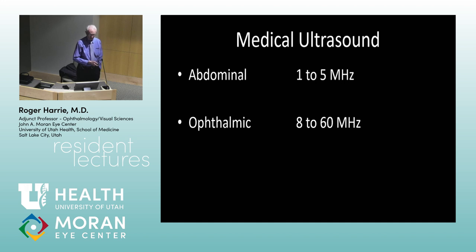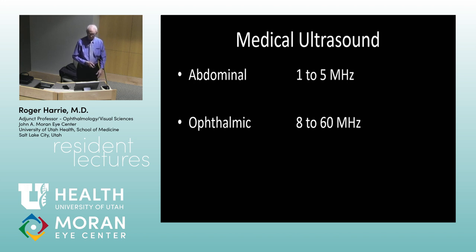In medical ultrasound, abdominal frequencies are lower because higher frequency means less penetration — there's an inverse correlation. In the abdomen you want to go deeper to see kidneys and livers, so you keep frequency around the 1 to 5 megahertz range. In ophthalmology we have the advantage of a small structure — about an inch — with a lot of fluid, so ultrasound goes through easily. You can use high frequencies up to 60 megahertz, giving much better resolution.